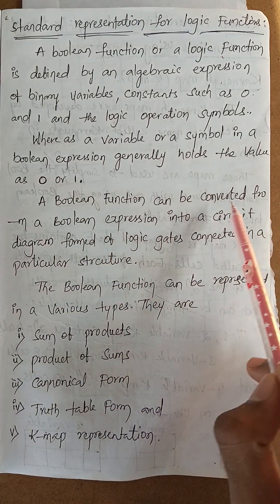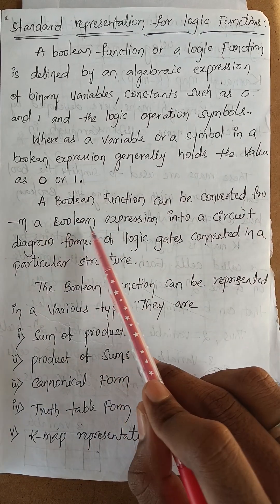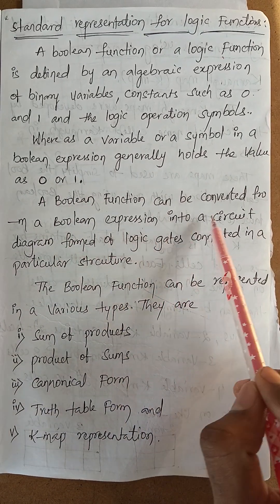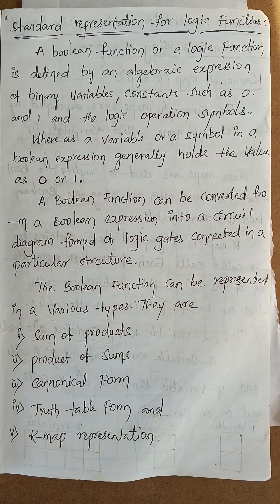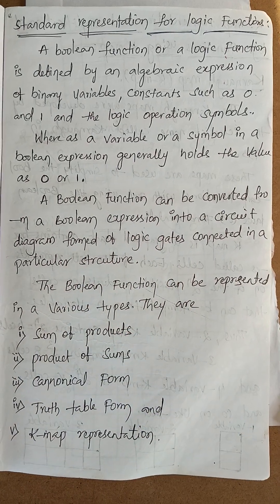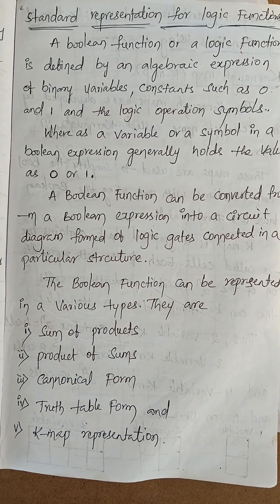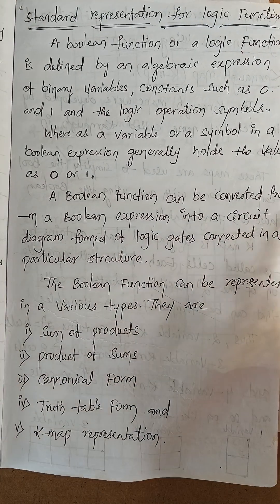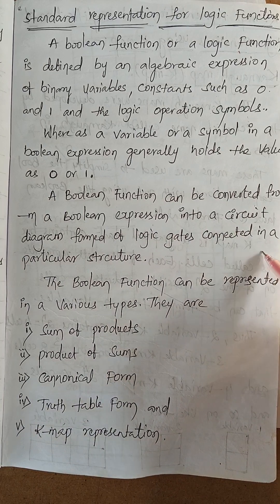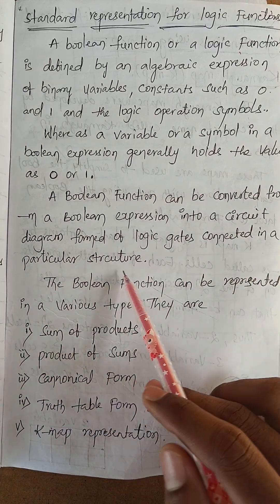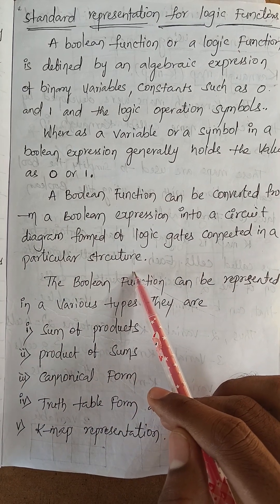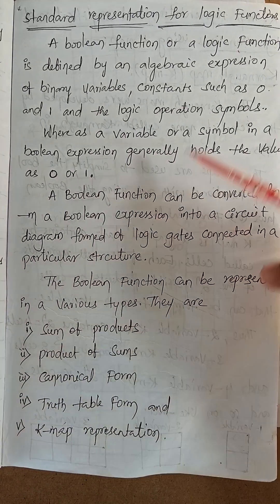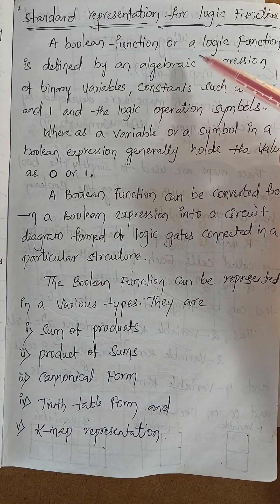The variable or symbol in a Boolean expression holds the value as 0 or 1. The Boolean function can be converted from a Boolean expression into a circuit diagram formed by logic gates connected in a particular structure.